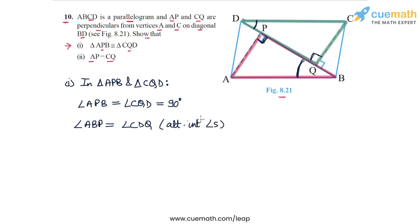So two angle pairs are equal. All we need is a side pair to be equal now, so that we can claim congruence between the two triangles. And for that, we know that AB must be equal to CD, because these are opposite sides of the parallelogram ABCD. So AB is equal to CD. And this is because these two sides are the opposite sides of a parallelogram.